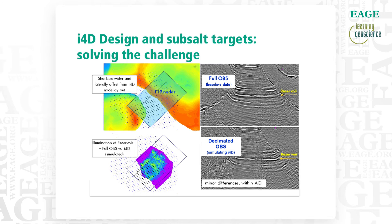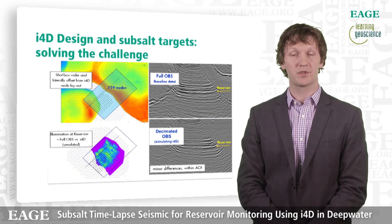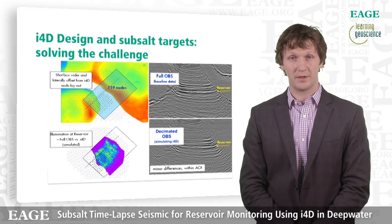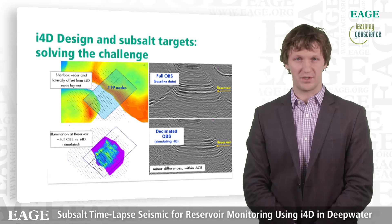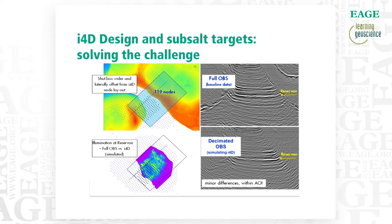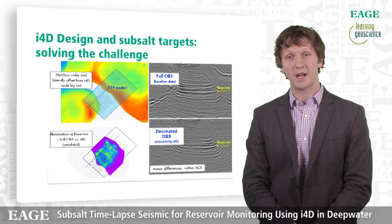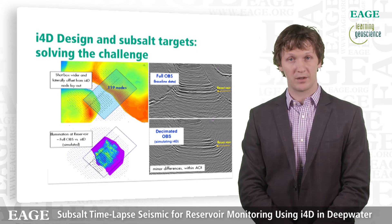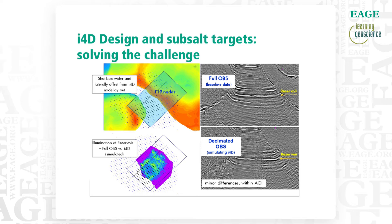To compare those two images, we normalize and cross-correlate them, then look at the reservoir interval. With a normalized cross-correlation, when two images are very similar you get a value close to 1, and if they're dissimilar the value falls toward 0. The purple areas in that result show values near 0, while green and blue represent values close to 1. This showed that directly below the node patch we have very similar images — such that acquiring a 4D survey with this node patch and shot box would yield very good 4D repeatability and high confidence in the signals.